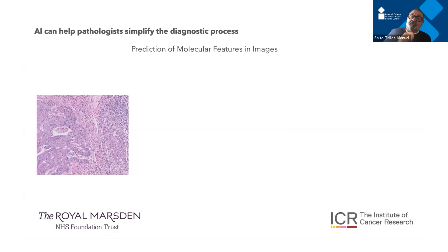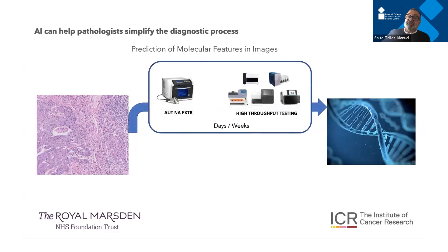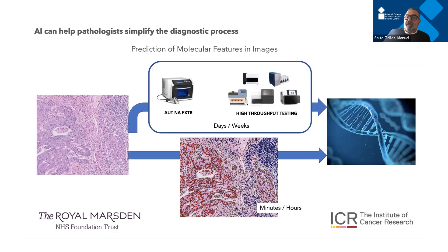We can start predicting things from an image that until now we had to do through very convoluted mechanisms. If we want to start with a tissue and end up with genomic information, the way we do it today involves very complex processes using significant technology — a process that can take days if not weeks. We are applying artificial intelligence to those images in the hope that it will allow us to predict the molecular basis of that disease as accurately as our molecular analysis, but with a turnaround time of minutes or hours instead of days and weeks.